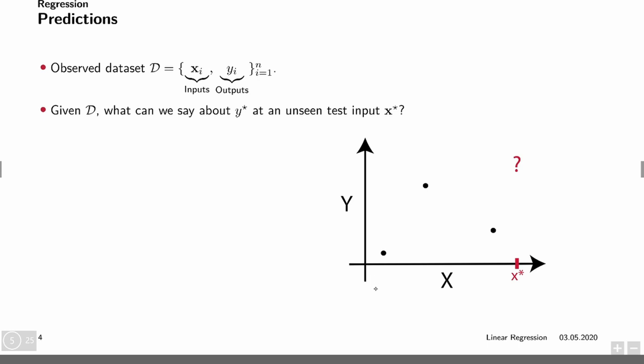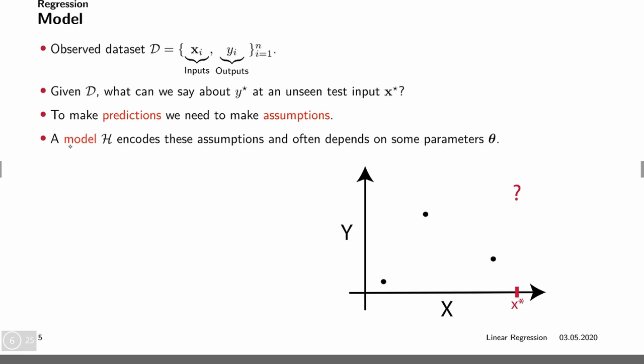We can make multiple assumptions — for example, assume a parabola. However, these assumptions are encoded in a model which depends on some parameters. We want to do linear regression today in detail. The model we will assume is a linear one: it takes the input variable, multiplies it by a weight for a single input variable, adds a bias term, and that is our predicted y.